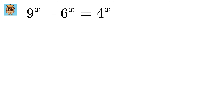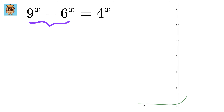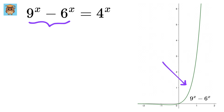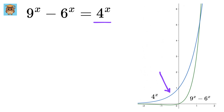Before we start, let us look at the graph of 9 to the power of x minus 6 to the power of x, which will look like this, and then let us plot 4 to the power of x. We can see that it intersects at one point only, which is near 1.2.